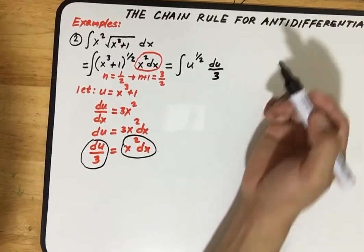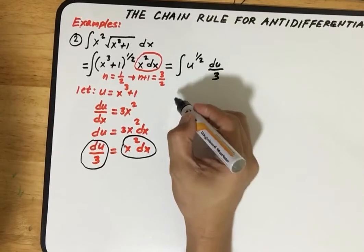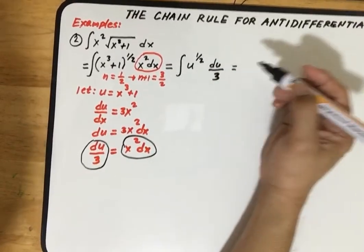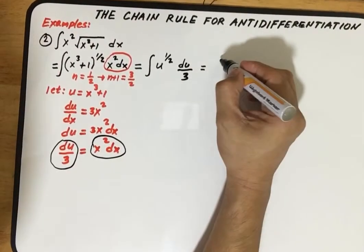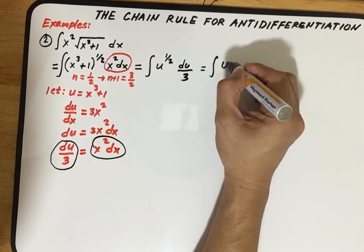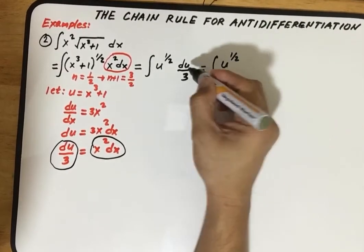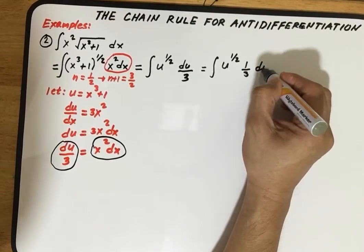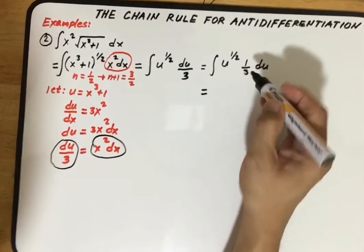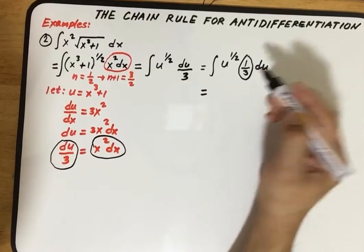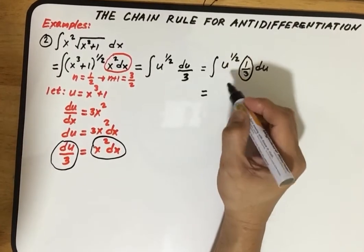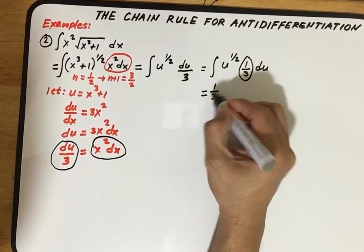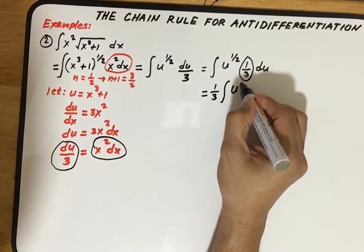This can be written as integral of u to the one-half times du over 3, which is just one-third du. Put this outside the integral symbol, so we have one-third integral of u to the one-half times du.